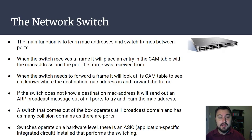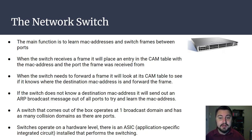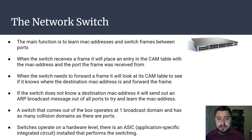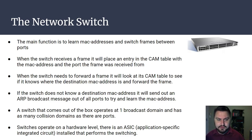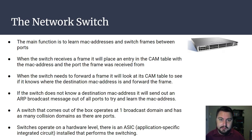Next up, the network switch. The main function of the network switch is to learn MAC addresses and to switch frames between ports — that is what a switch does. You can get a Layer 3 switch that does some routing, but the main point of a switch is to switch traffic. When the switch receives a frame, it will place that frame into the CAM table — its content-accessible memory — where it stores MAC addresses it has learned and knows which ports those MAC addresses are bound to. When the switch needs to forward a frame, it looks at its CAM table to find the destination MAC address and forwards that frame out of that port.